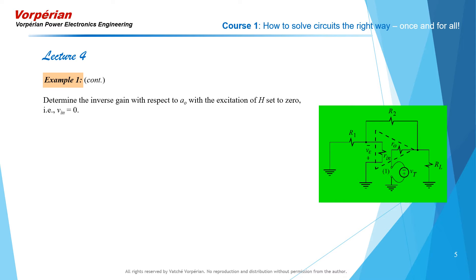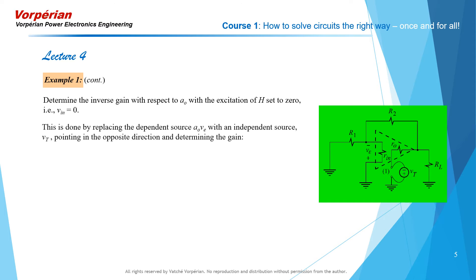We now have two additional calculations to perform in order to apply the extra element theorem. The first one is the inverse gain with respect to A0 with the excitation H set equal to zero — that is, the input voltage equal to zero. The second one is the inverse gain with respect to A0 with the response H set equal to zero. Now we're going to perform the first one, with the excitation Vin set equal to zero by short circuit.